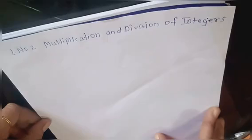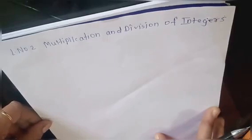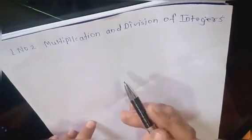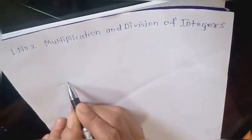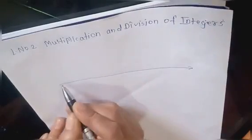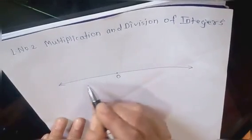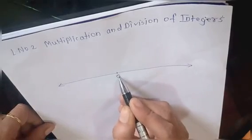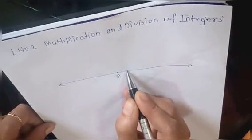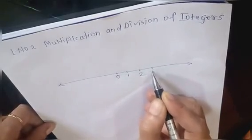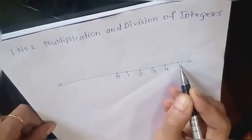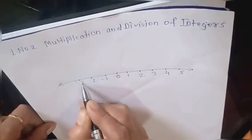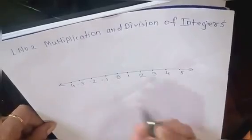Students, in the 6th standard you learned about the addition and subtraction of integers on the number line. Here is the number line — a line on which we place integers at equal gaps. On the right side of 0 we have 1, 2, 3, 4, 5, and on the left side minus 1, minus 2, minus 3, minus 4 onwards.